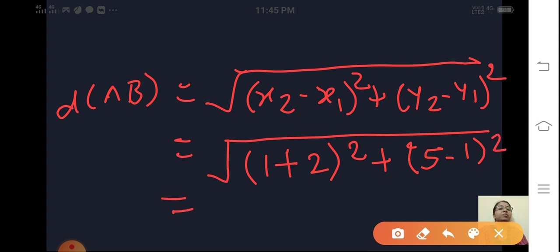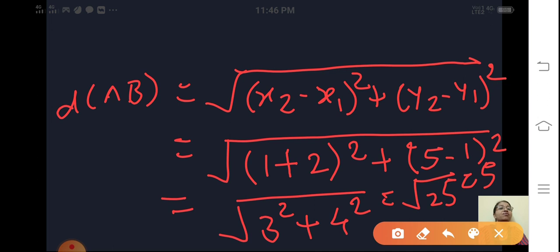Now let us simplify. You will get 2 plus 1, 3 square plus 5 minus 1, 4 square. So this you will get square root of 9 plus 16 is 25 that is equal to 5 units.